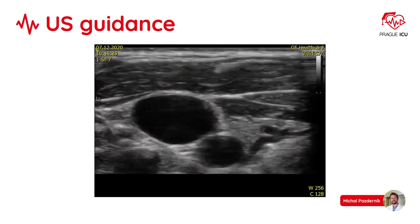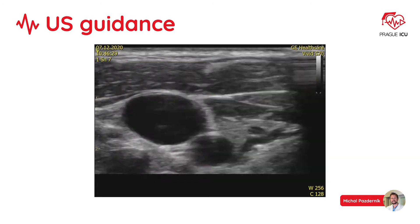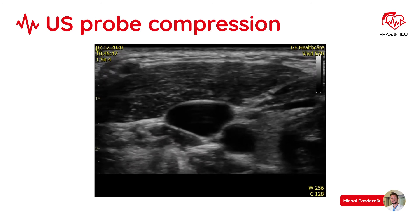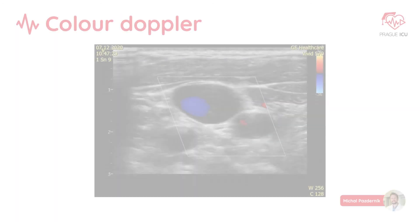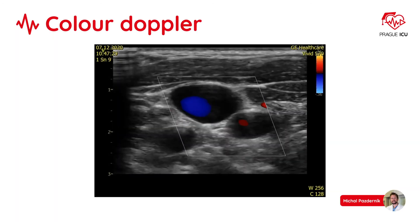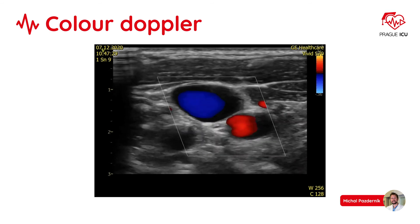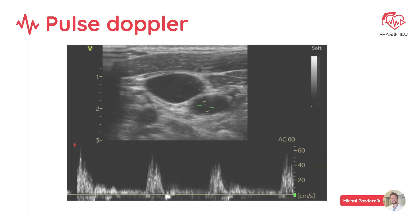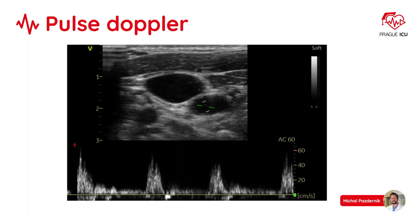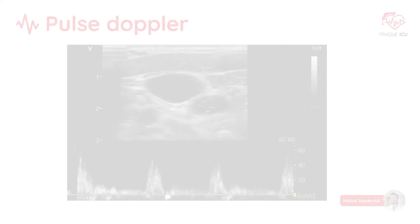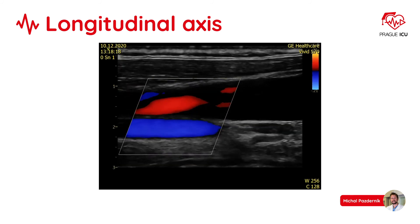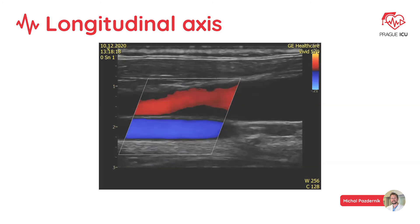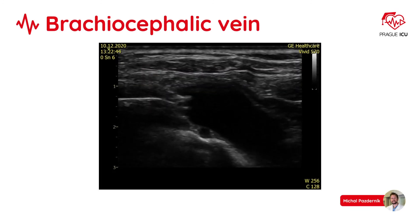On ultrasound in 2D, the vein is larger and oval. The vein can be nicely visualized as a compressible structure, compared to the artery which is non-compressible. Color Doppler shows an overview of the direction of flow in both vessels. Pulse Doppler with a cursor in the carotid artery shows pulsatile flow. The longitudinal axis view shows the vein being more superficial compared to the artery. We can also tilt the probe more downwards and follow the internal jugular vein into the brachiocephalic vein.